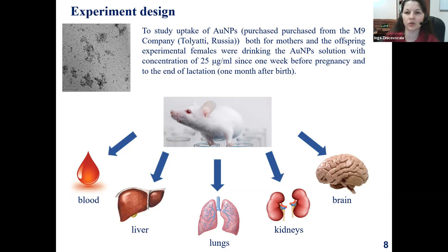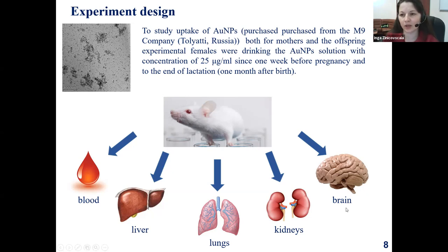There were nanoparticles which we obtained from the Russian company M9, and we gave the animals this solution. The size of nanoparticles was in the range of 10 nanometers. We gave these nanoparticles to mice before pregnancy, during the pregnancy, and during the lactation period. After this period, part of the animals — females and offspring — were used to determine the accumulation of gold in different organs, which are indicated on the slide. Another part of the animals was used by our colleagues for behavioral tests to assess the cognitive abilities of the females who drank the solution containing gold nanoparticles and of the offspring in which gold was accumulated in organs.